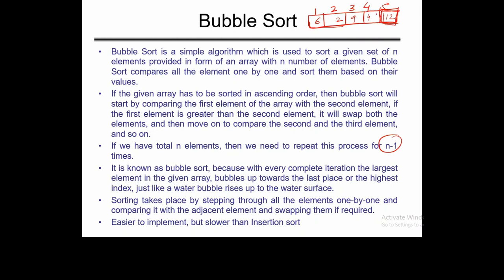After placing the largest element at the last position, the list reduces to 4 elements and the same process is repeated. In the second iteration: 6 is compared with 2, 6 is greater so swapping occurs. Then 6 is compared with 9, 6 is less than 9, so no swapping. Then 9 is compared with 4, 9 is greater so swapping occurs. After the second iteration, the second largest element is placed at the second largest position.